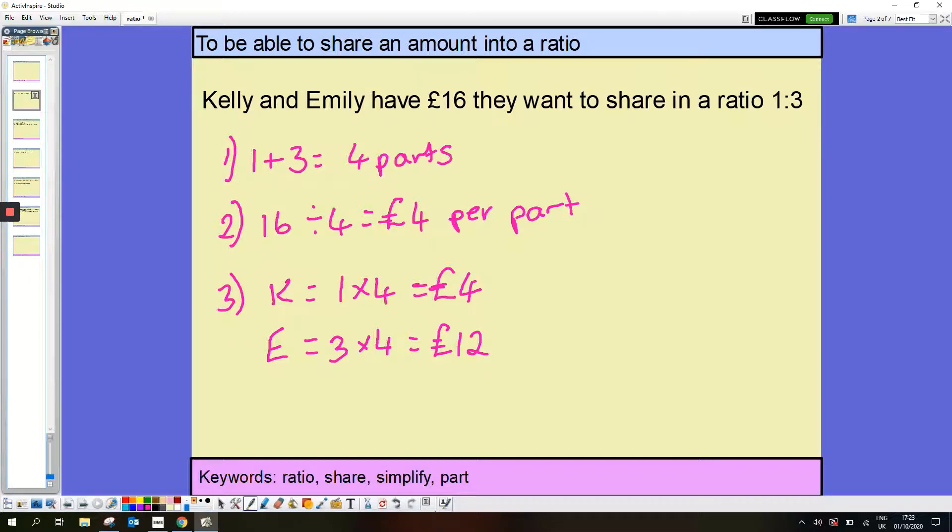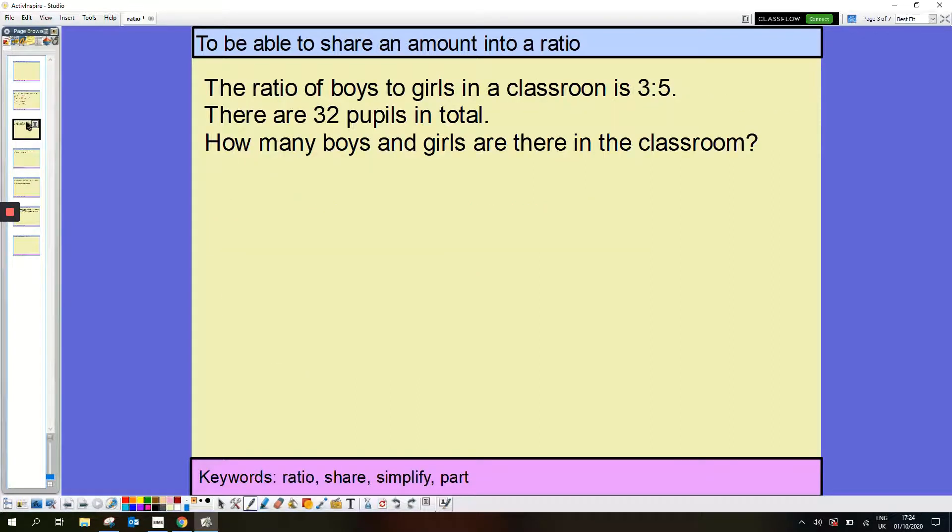Another example then. The ratio of boys to girls in a classroom is 3 to 5, and there are 32 pupils in total. How many boys and girls are in the classroom? So my step is to work out how many parts I'm working with. So 3 add 5, I've got 8 parts.